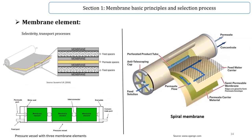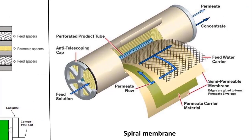In the right picture, you can see a spiral membrane element. In this element, feed is discharged to the feed channel spacers. The feed channel spacer is an essential part of the spiral wound module to separate membrane leaves.